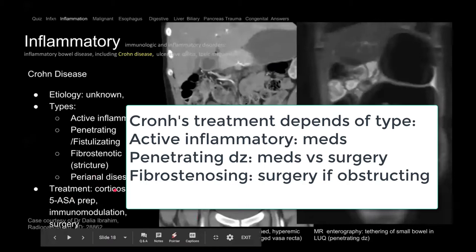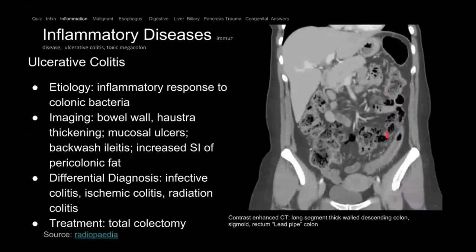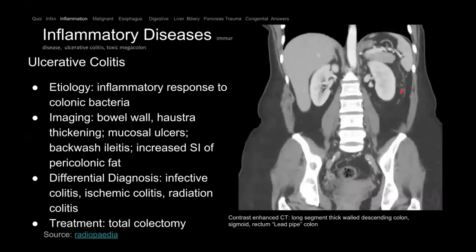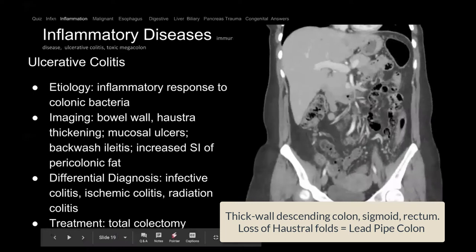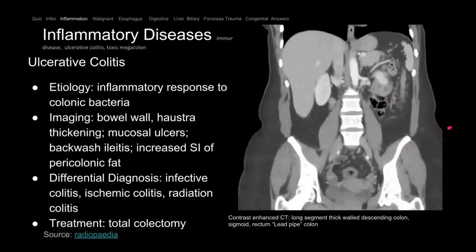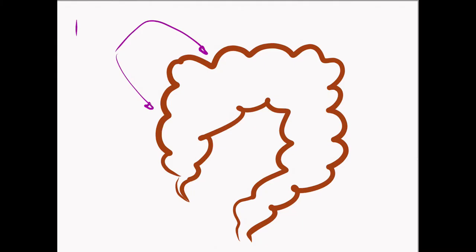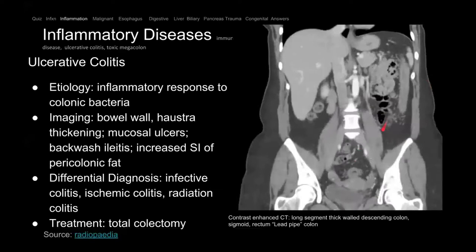Ulcerative colitis is the other form of IBD. The mesentery is engorged and it's a continuous segment — here's the descending colon, sigmoid, and rectum — there's a continuous long segment of thickening with some hyperemia. This is called lead pipe colon, seen with ulcerative colitis. Patients lose normal haustral folds, and the wall becomes straight and narrow. In severe cases, the only long-term cure is a total proctocolectomy.